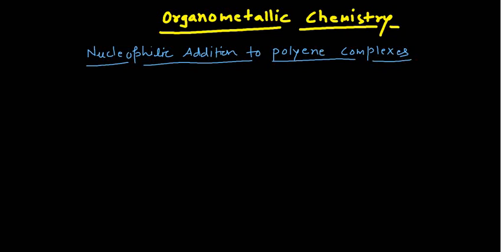Hello friends, welcome back to the Tetrahedron Chemistry Classes. In today's lecture I am going to discuss another very important topic in organometallic chemistry. The topic is Davis-Green-Mingos rule, which you can abbreviate as DGM rules. Before going into the details of the DGM rules, you should know some important prerequisite concepts.